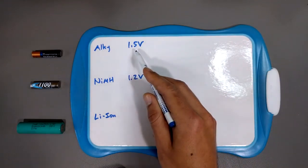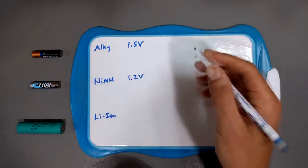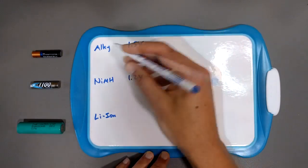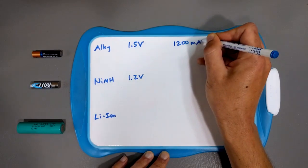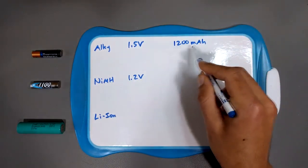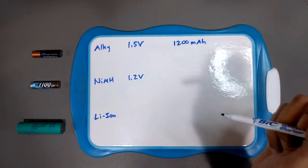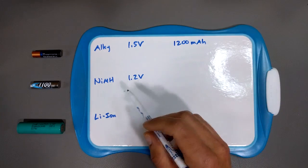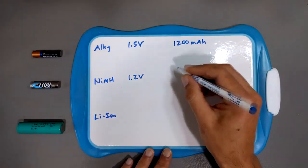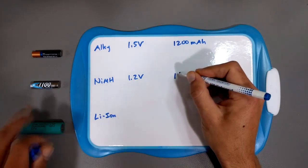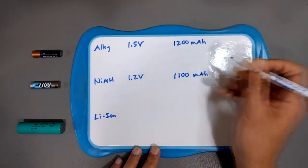Now, the current, typically for say, a good triple A battery, the current rating is actually 1200 milliamp hours. These are not, you know, different batteries are different. So I'm just using this as kind of a typical example for your run of the mill triple A alkaline battery. This nickel metal hydride that I bought is 1100 milliamp hours. In fact, it actually says typical 1100 milliamp hours.